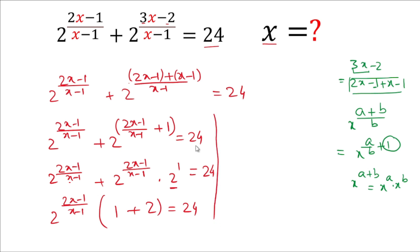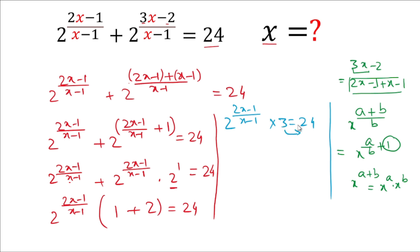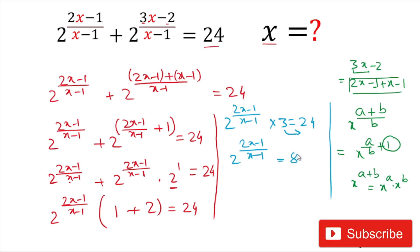So we have 2^((2x-1)/(x-1)) multiplied by 3, equal to 24. To solve, we take 3 to the right-hand side: 2^((2x-1)/(x-1)) equals 24 divided by 3, which is 8. Now 8 can be written as 2 × 2 × 2, so we write 8 as 2^3.